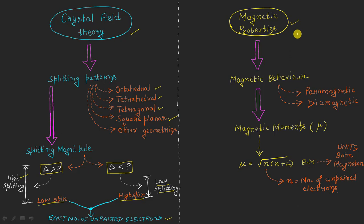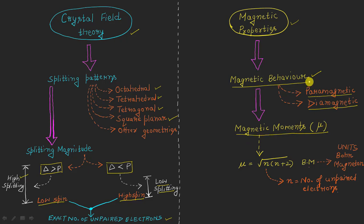The magnetic properties are essentially the magnetic behavior of any transition metal complex — whether it is paramagnetic or diamagnetic in nature. Magnetic moments are also associated with the magnetic behavior of any complex. The magnetic moment, mu, can be easily calculated using the formula: mu equals the square root of n(n+2) Bohr magnetons, where n is the number of unpaired electrons in the given transition metal complex. So if we can find out the number of unpaired electrons, we can easily calculate the value of mu.